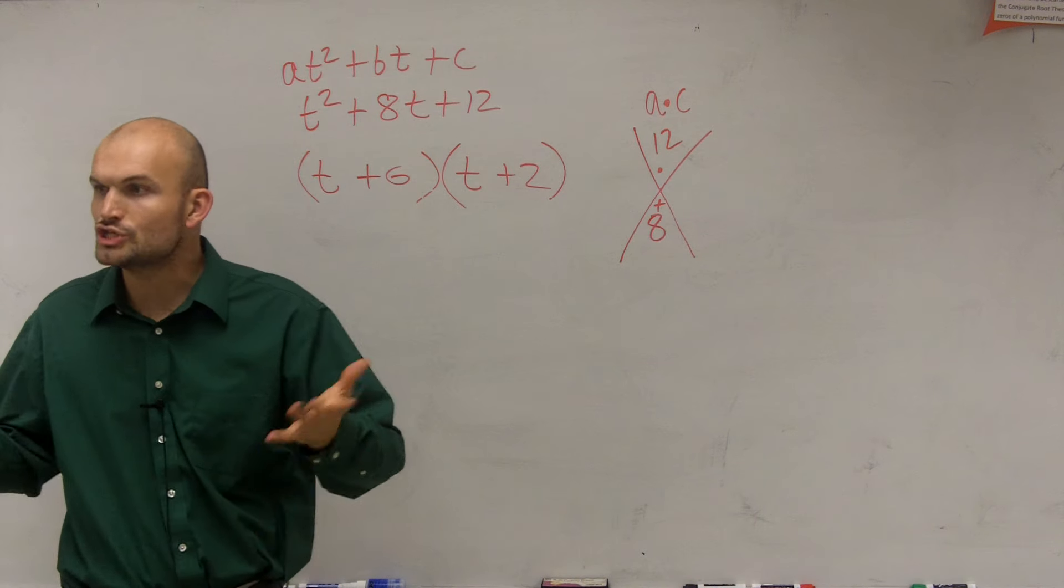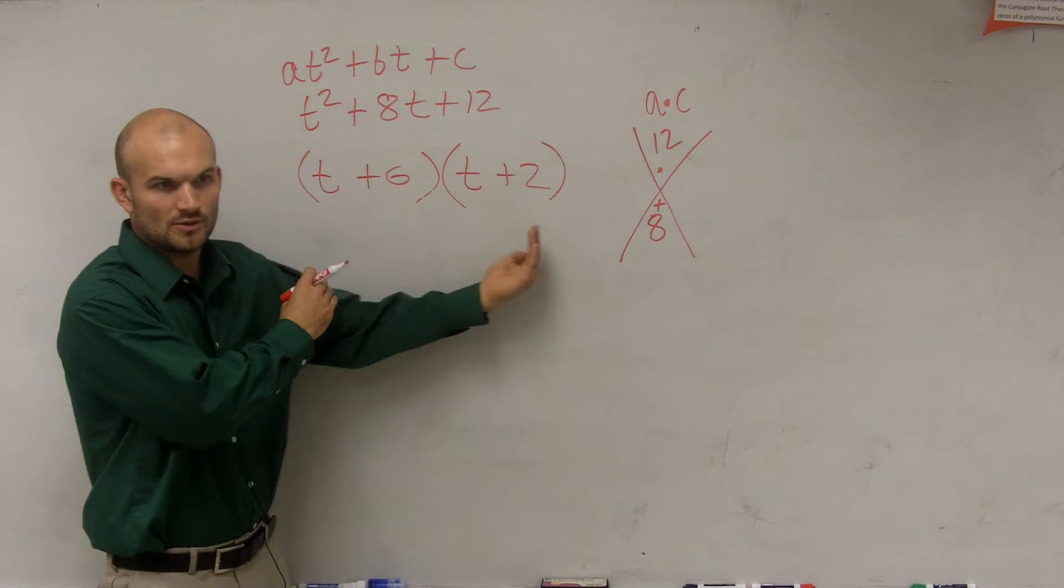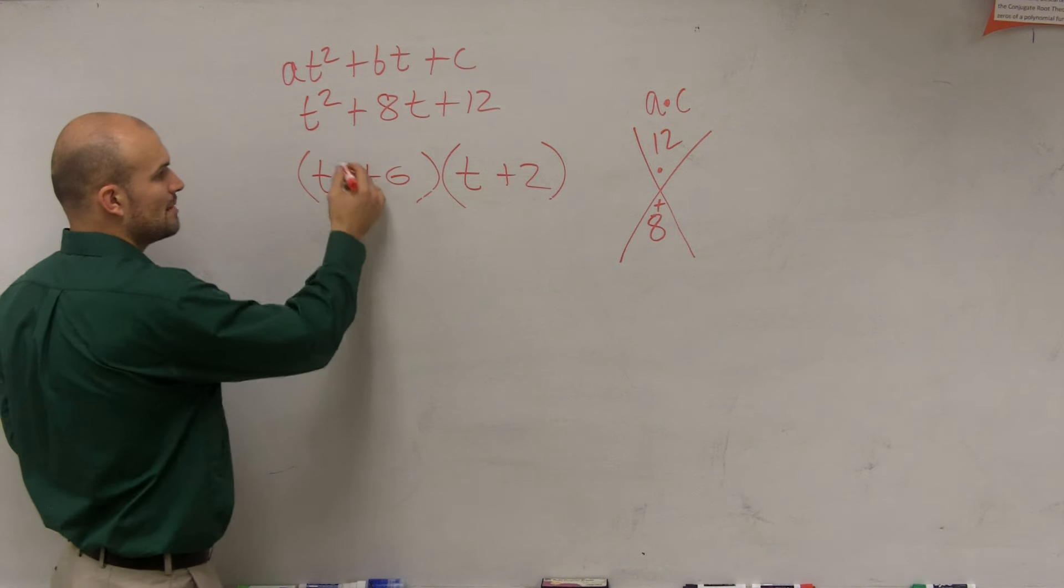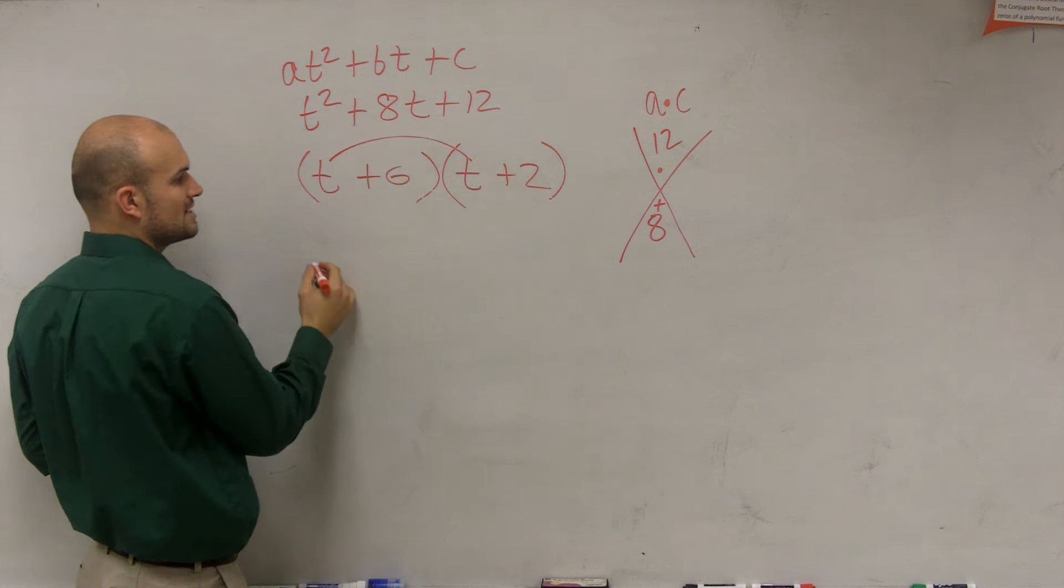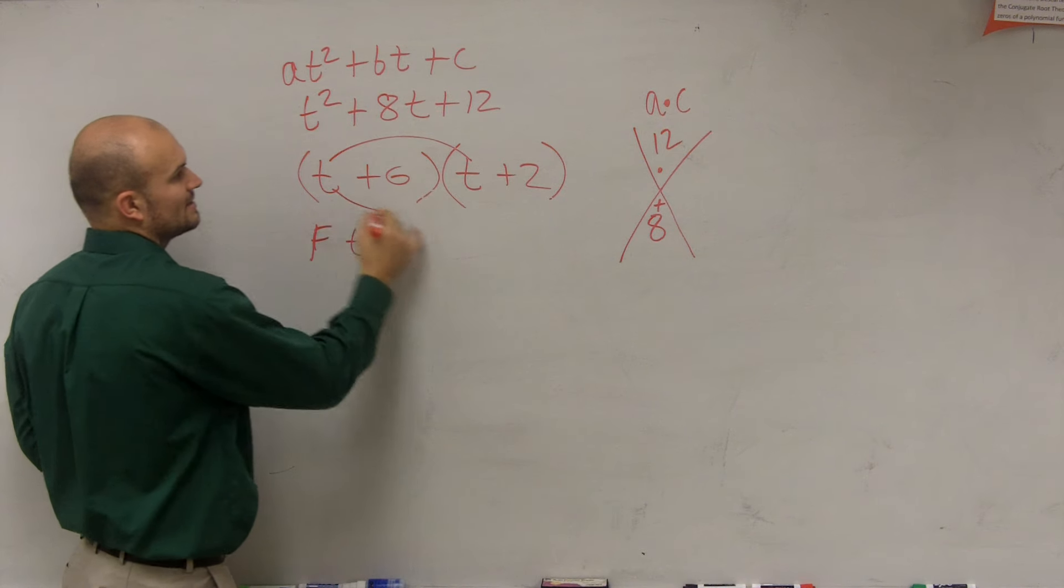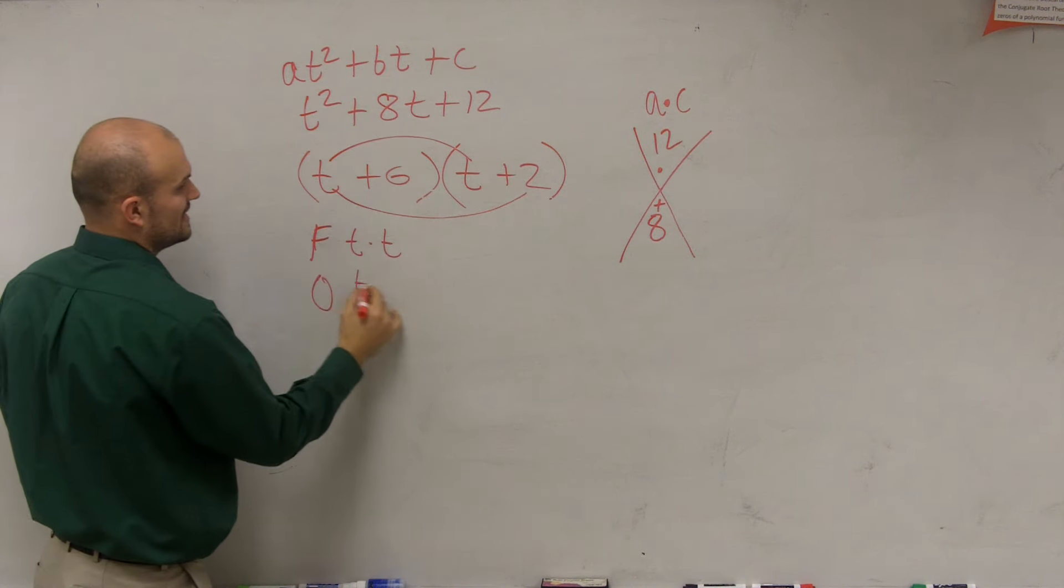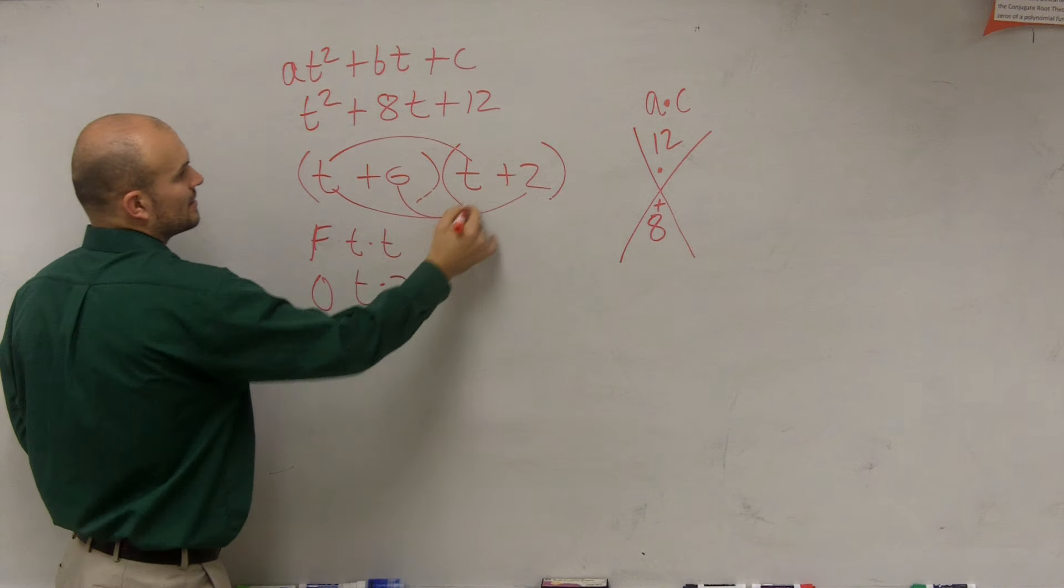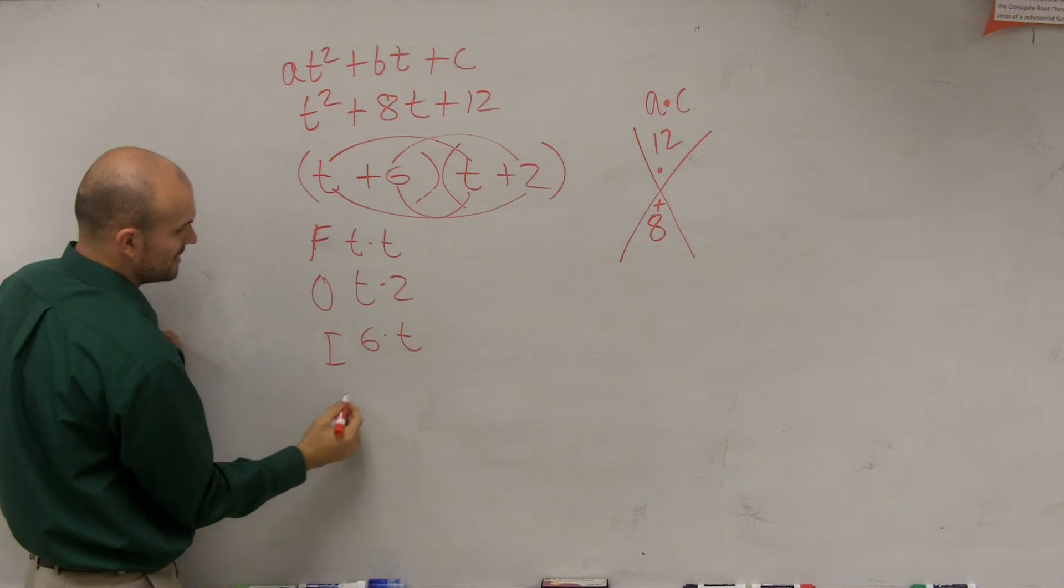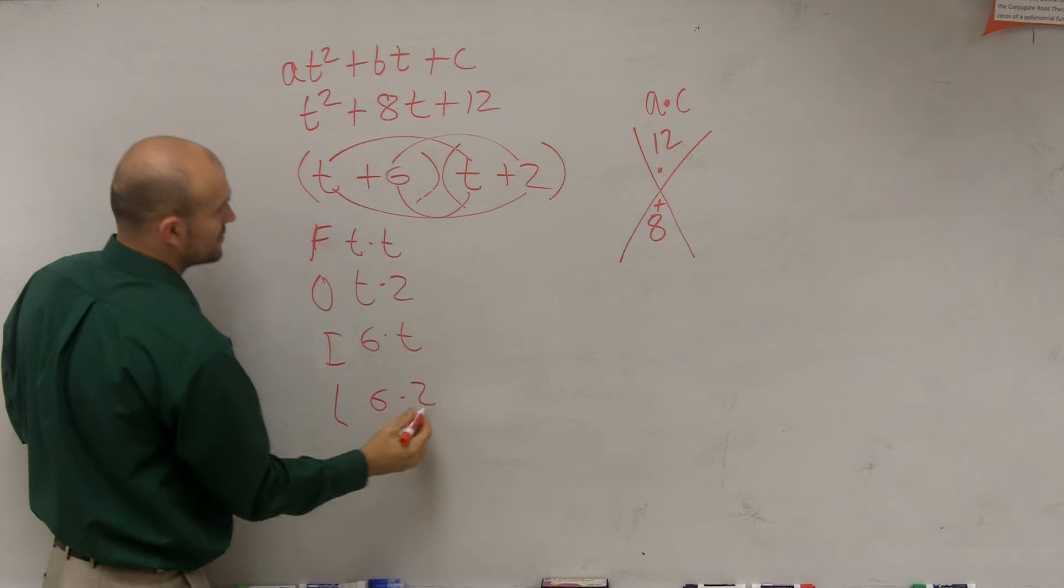And what I wanted you guys to do to check your work, do you guys remember how to multiply binomials? We'll have to probably review that. Multiplying binomials, remember you can use FOIL. First times first, which would be t times t, right? The outer, t times 2. The inner, 6 times t. And the last, which would be 6 times 2.